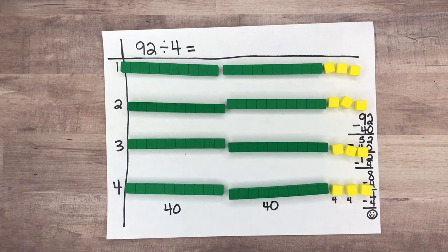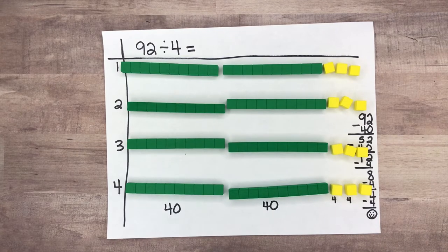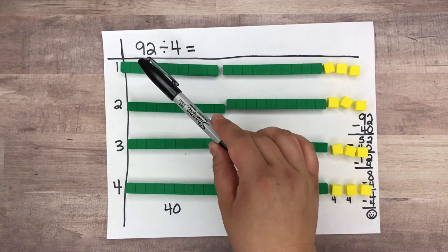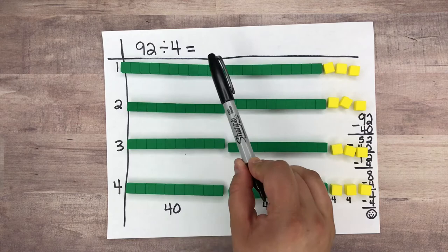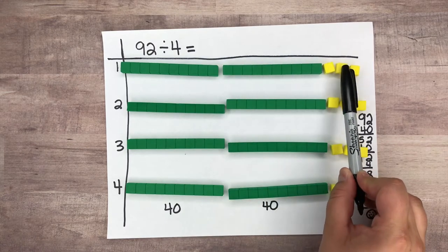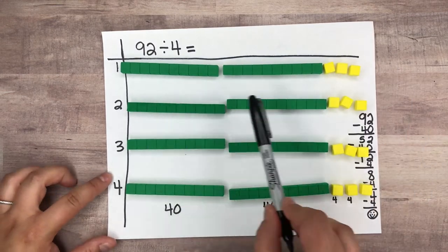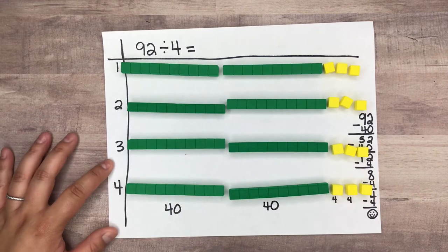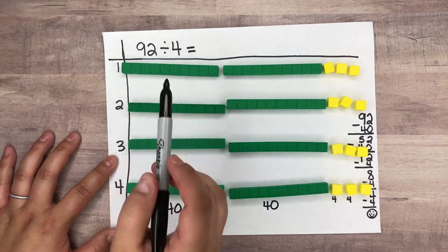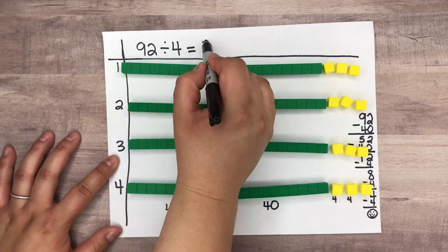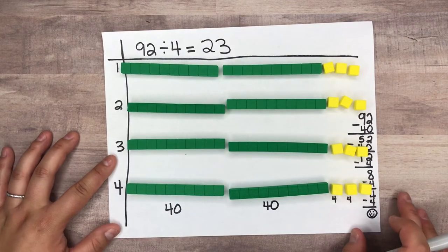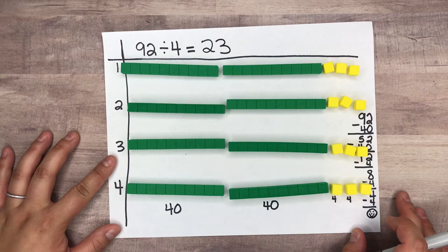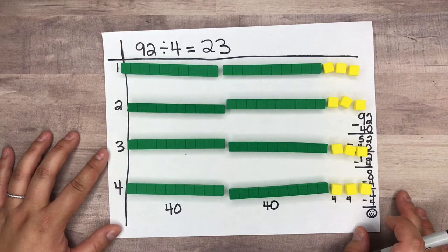So where is my answer? Let's look at our groups. In each group I have the same number: 10, 20, 21, 22, 23. Each group has 23, so my answer to 92 divided by 4 is 23. And that is how to divide using long division with an area model.